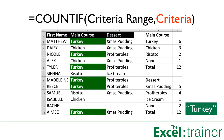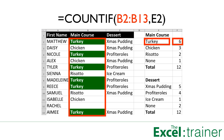The criteria could be the word turkey, but because the word turkey is in E2, it makes more sense to use the cell reference. So in our spreadsheet in F2 we put COUNTIF(B2:B13, E2), which tells Excel to count how many times the word turkey — which is in E2 — occurs in the range B2 to B13.